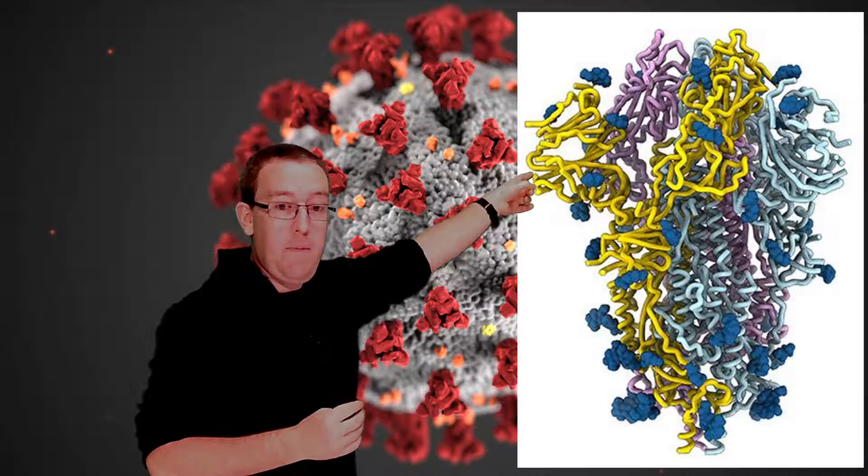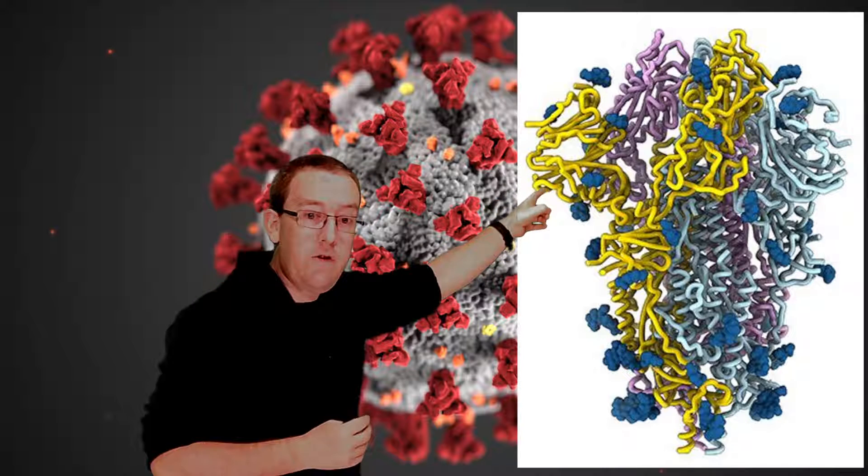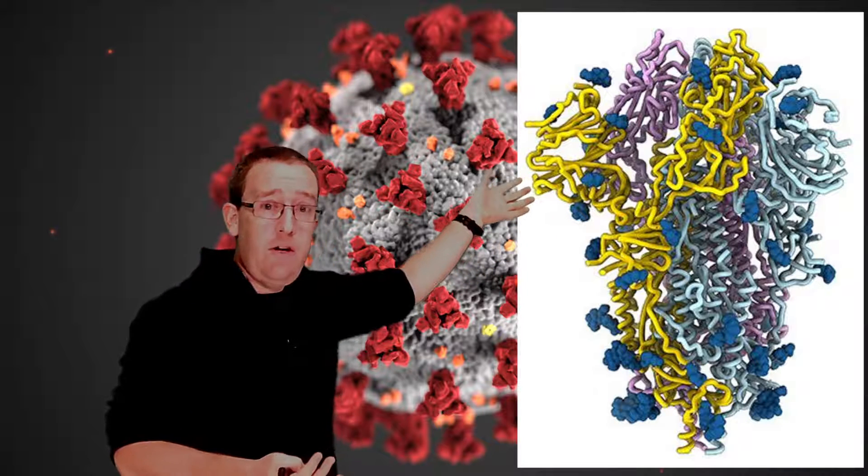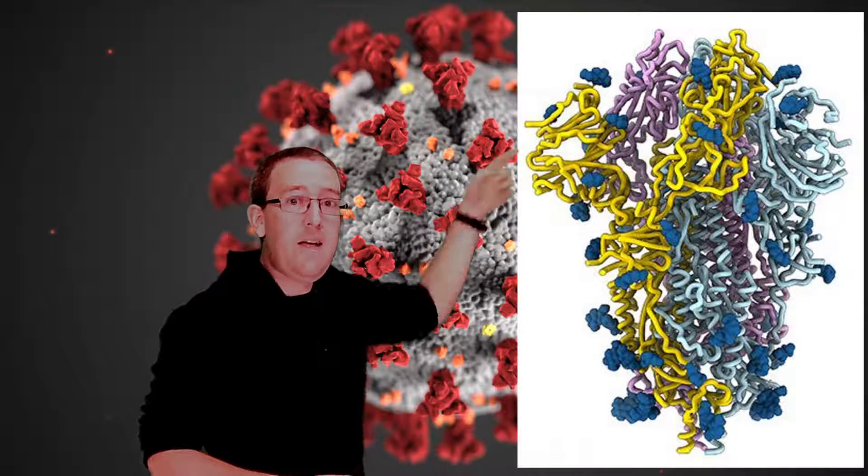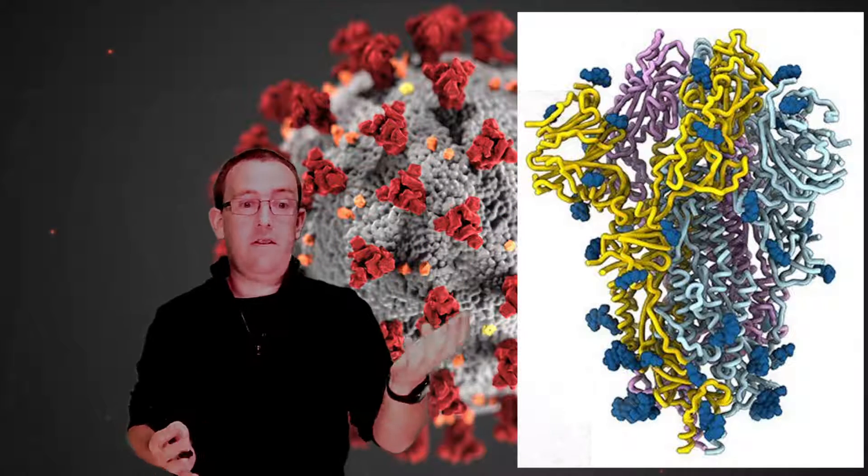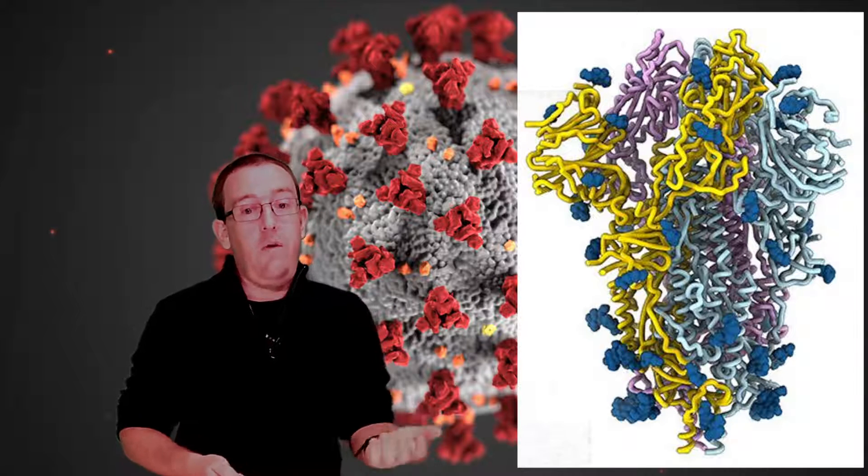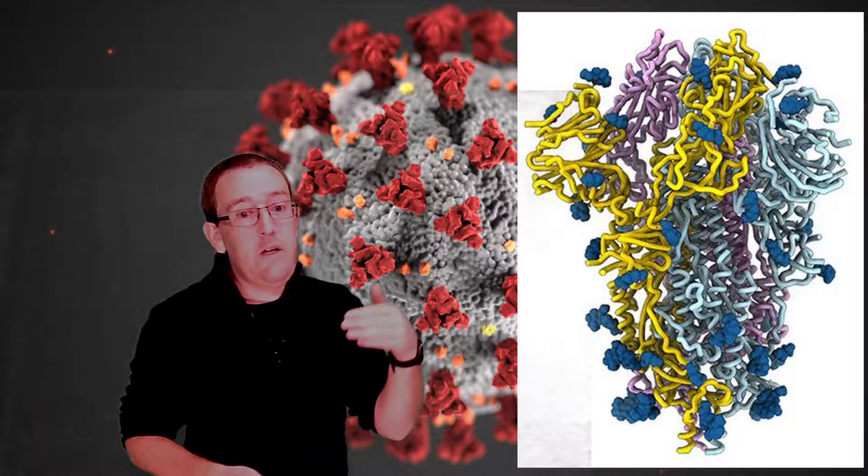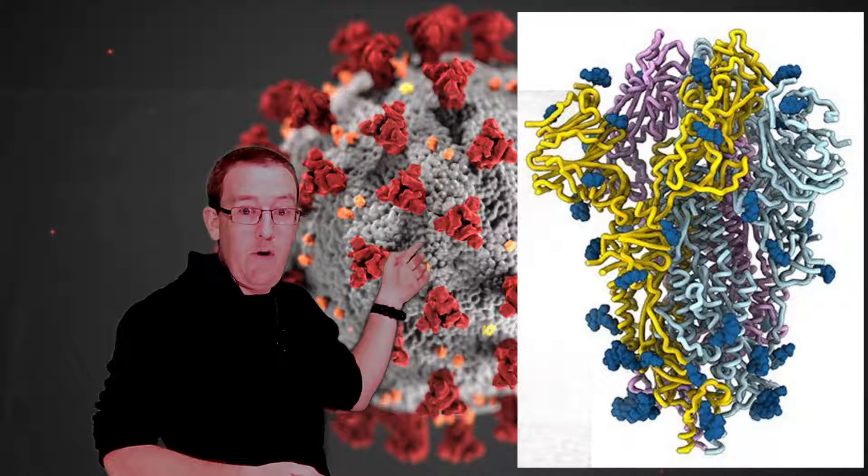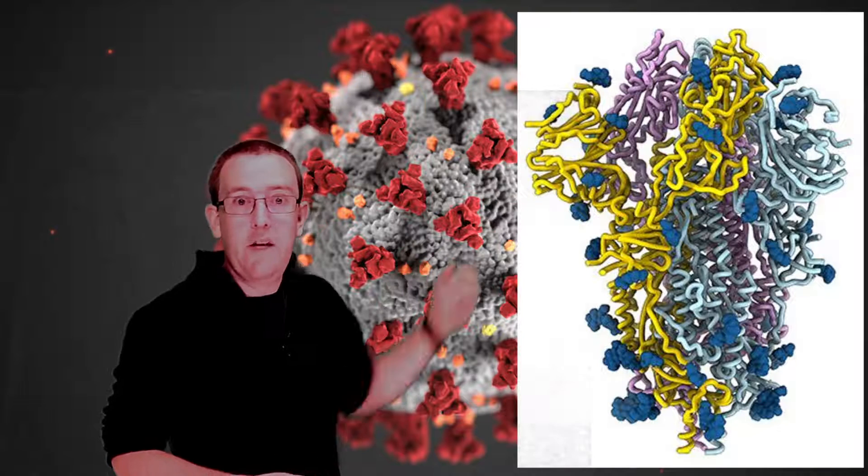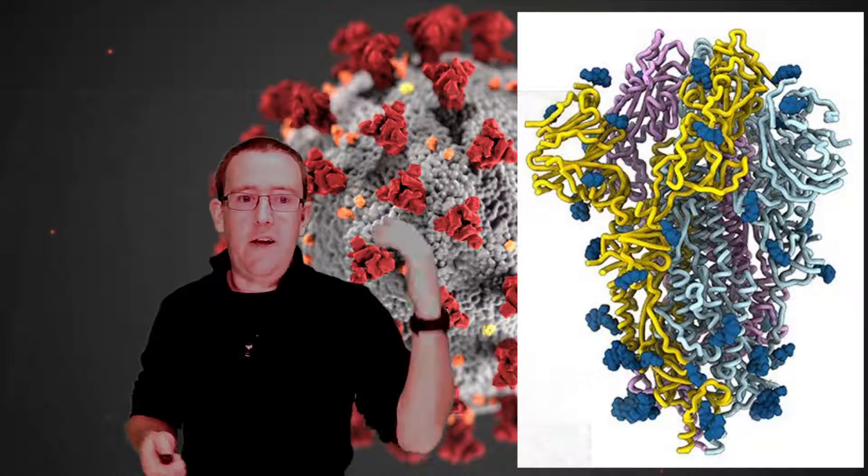Each strand is made of tons and tons of amino acids. Our mutation, which generates a new variant, might change one amino acid, and that could be completely irrelevant. One amino acid change might make no difference to the shape, infectiousness, or your body's ability to bind, because the antibody might bind onto a shape on the other side.